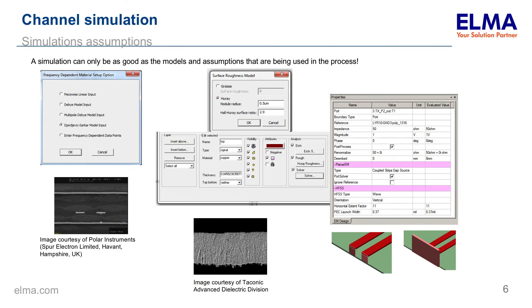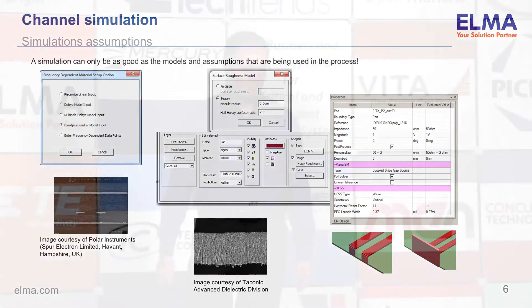There are a lot of concerns when cascading S-parameters, but if we're aware of them we can start solving the problems. A simulation can only be as good as the assumptions behind it. Depending on the simulator, you have assumptions about the dielectric. The dielectric isn't a uniform and isotropic material — there's a fiber cloth, glass weaves, and resin in between. Some models are better than others, but you have to talk to your manufacturer. Available models include the Debye model and the Georgievich-Sarkar model, among others.